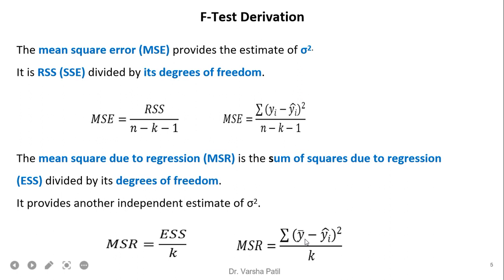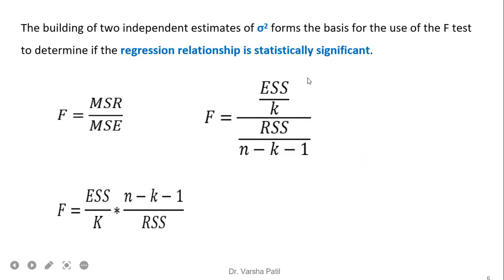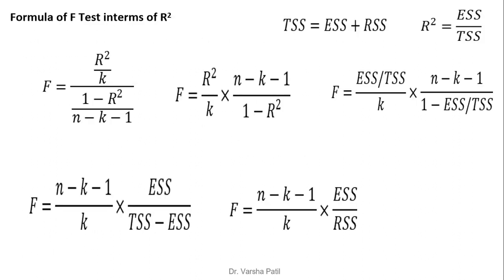ESS is the difference between the average value of Y and the predicted value of Y. Both RSS and ESS represent squared differences and thus are estimates of sigma-squared. Building two independent estimates of sigma-squared forms the basis for using the F-test to determine whether the regression relationship is statistically significant. The formula for the F-test is: F = MSR / MSE, where MSR = ESS / K and MSE = RSS / (N − K − 1). Arranging this formula gives the standard F-test expression.